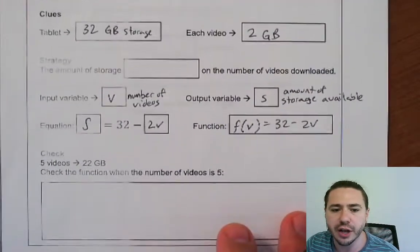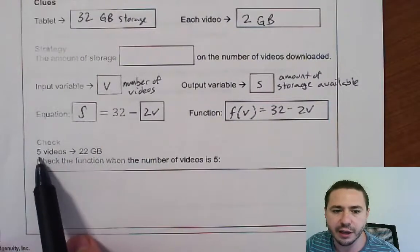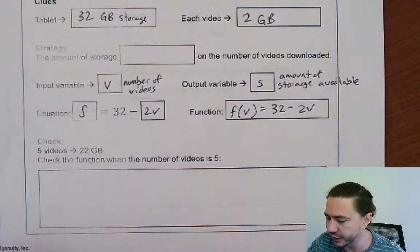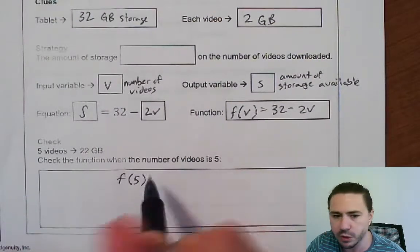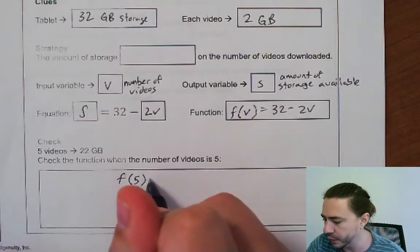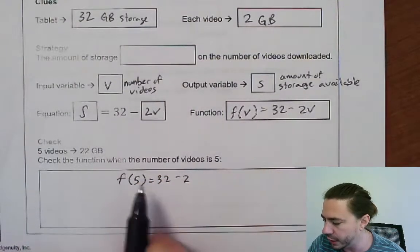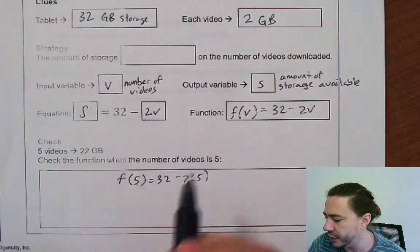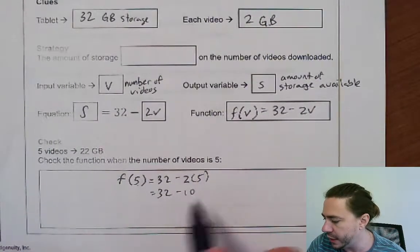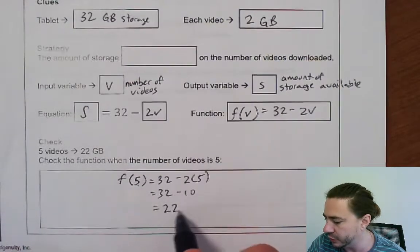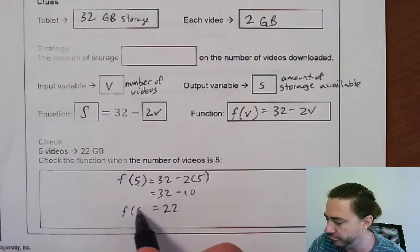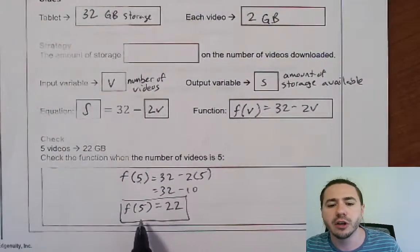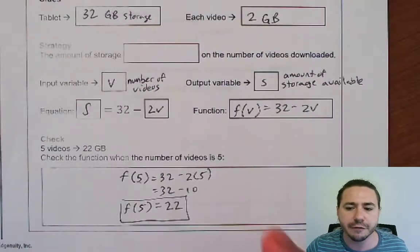Let's check: if you download five videos, you should have 22 gigabytes left. Testing f(5): 32 − 2(5) = 32 − 10 = 22. Yes, f(5) = 22. What that means is if you download five videos, you're going to have 22 gigabytes left in storage.